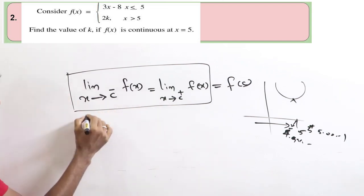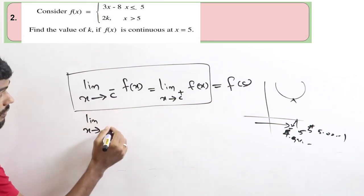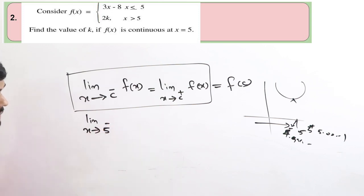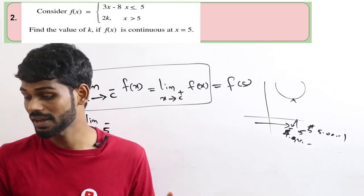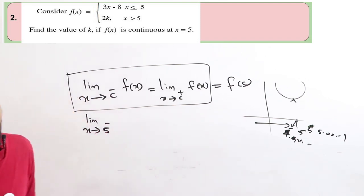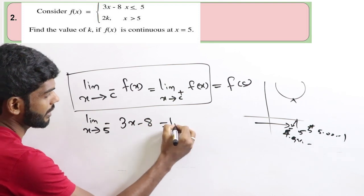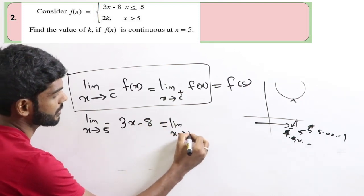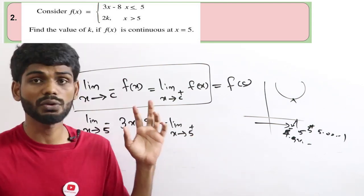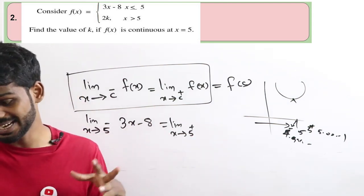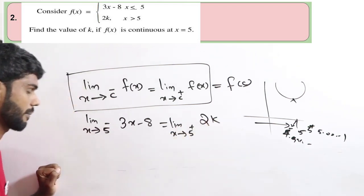Let's solve this. Limit x tends to 5 minus — since x is less than 5 we use 3x minus 8. This equals limit x tends to 5 plus of f of x, where x greater than 5 we use 2x plus k.